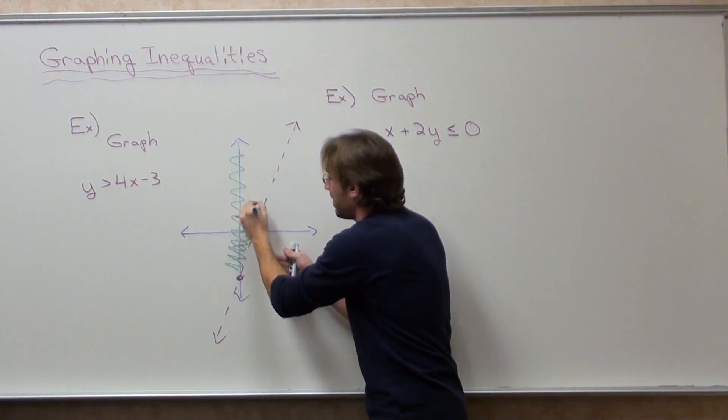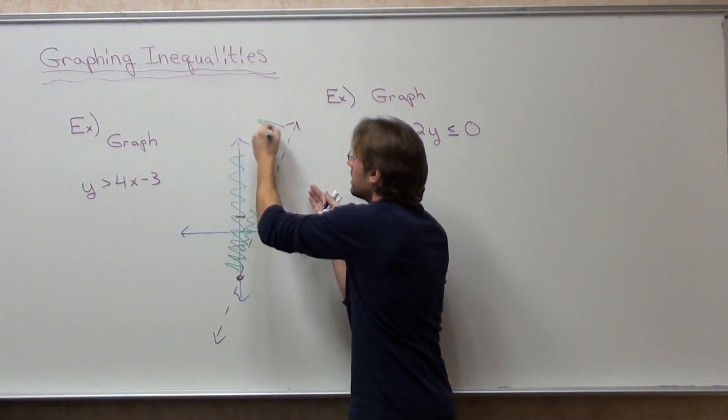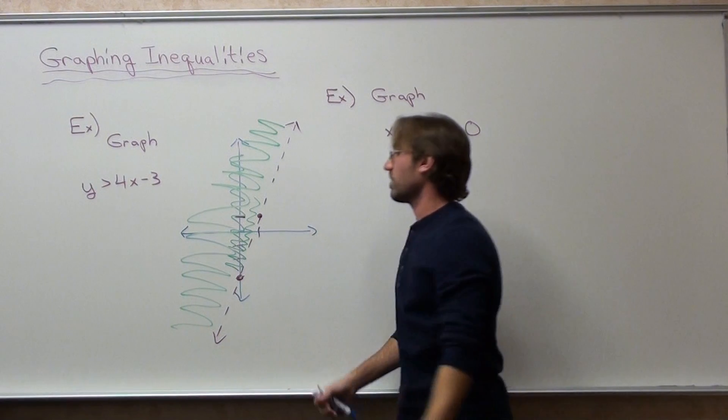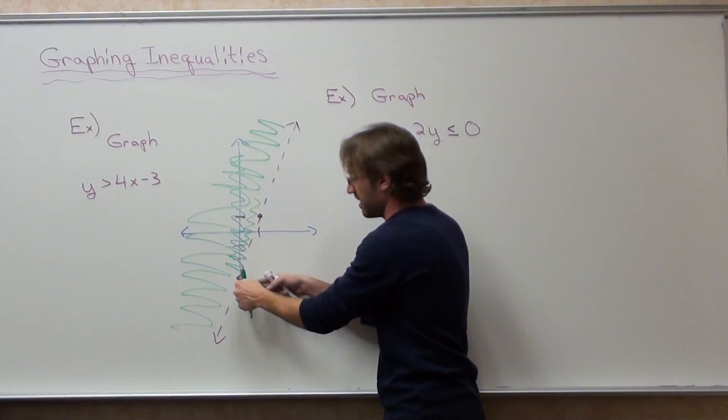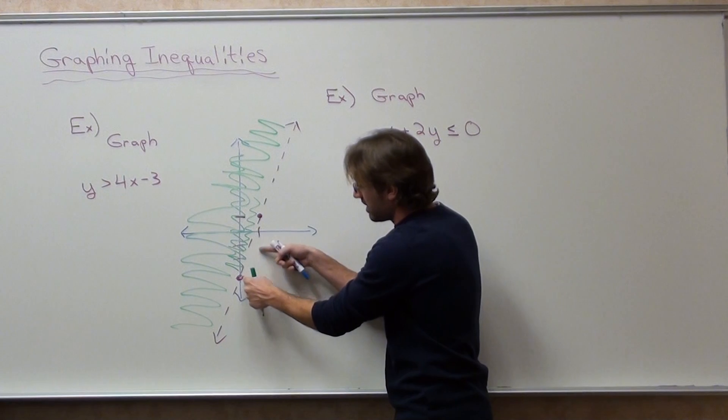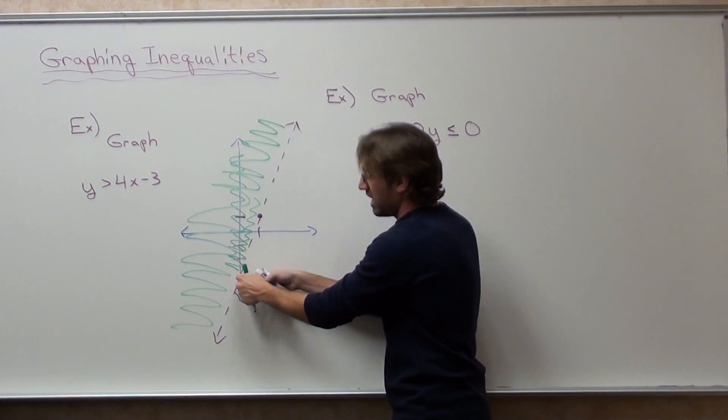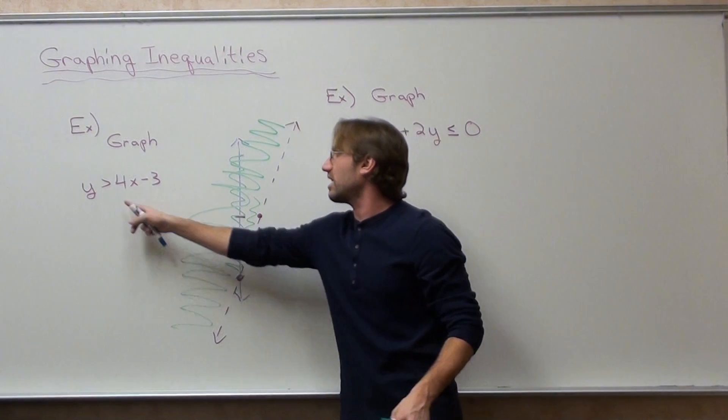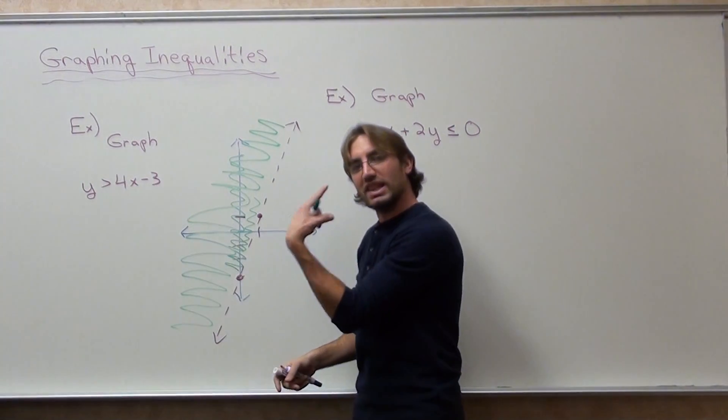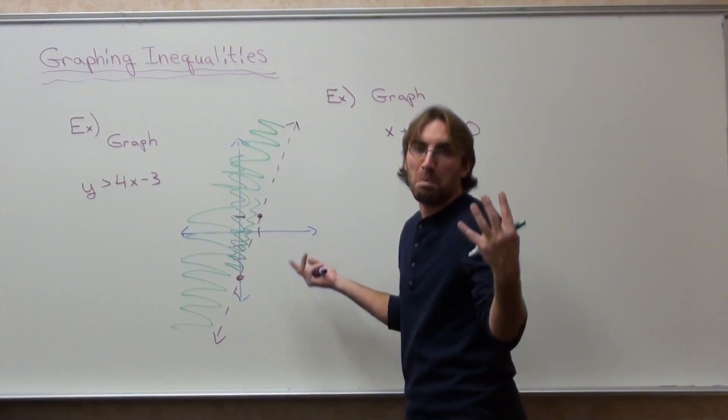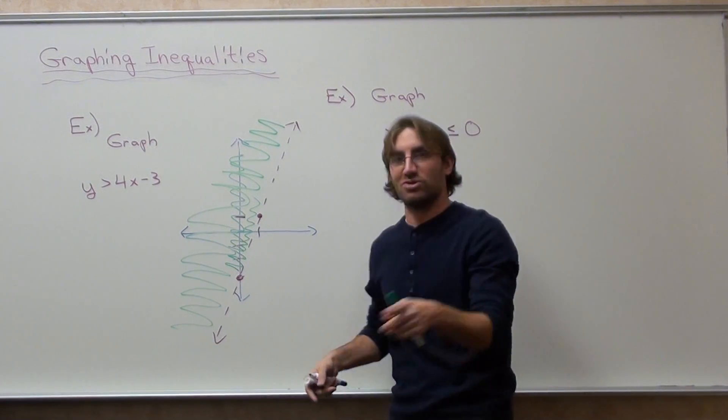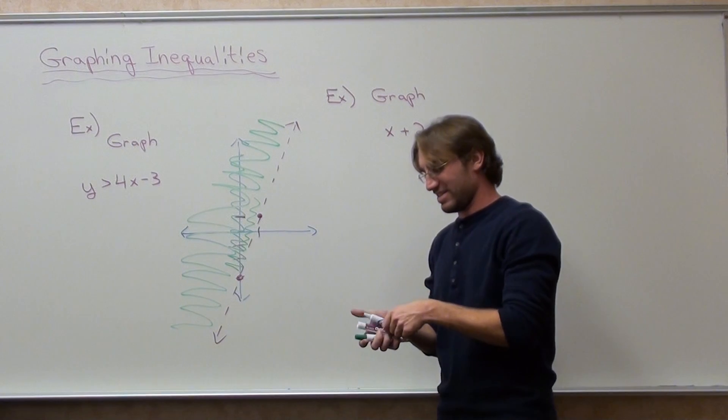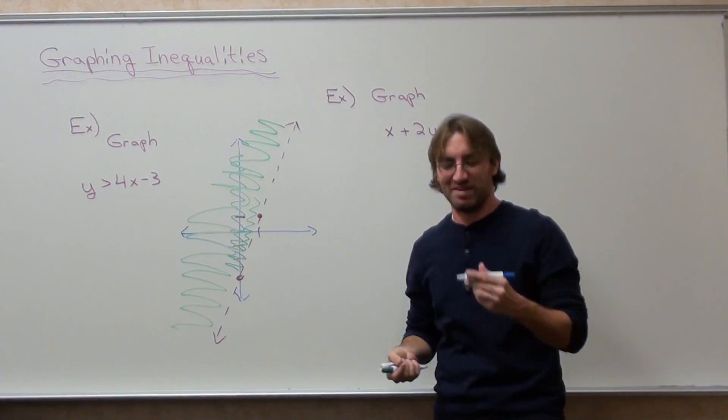Everything on this side of the graph is fair game, nothing on this side because this side is south of this point. I can't shade anything south of this point, but I can shade everything north of this point. It's basically like a compass—this means north. If it was less than, it would mean south, and that's what we're going to have on the next one.